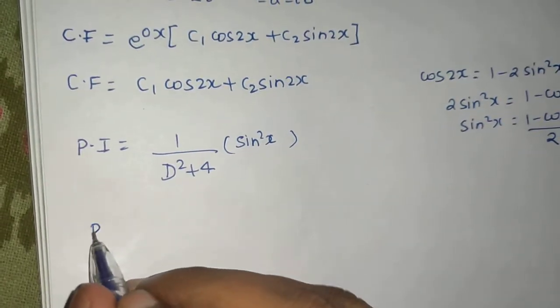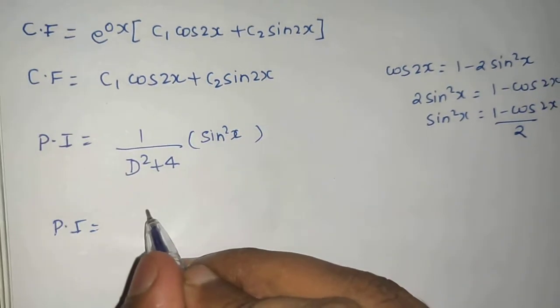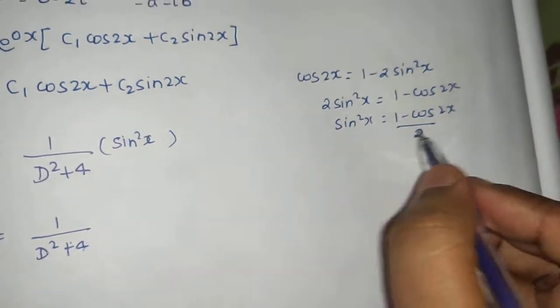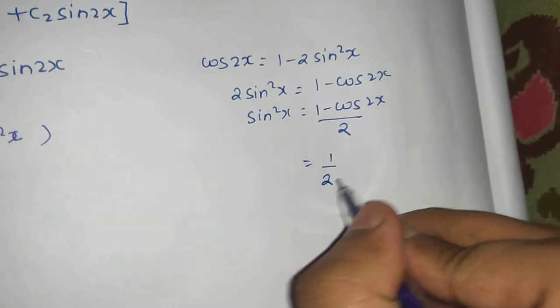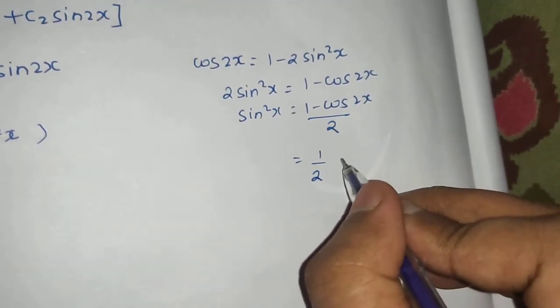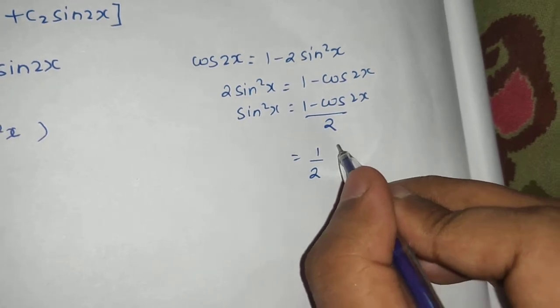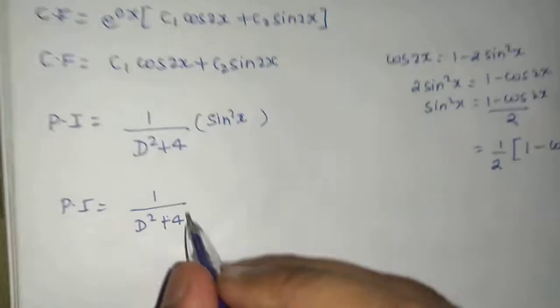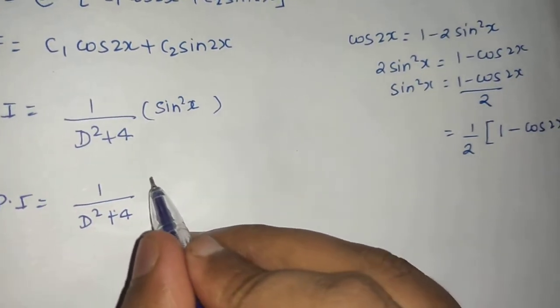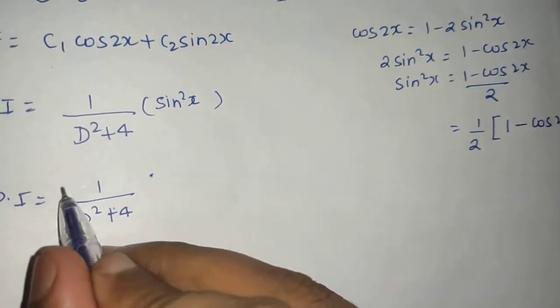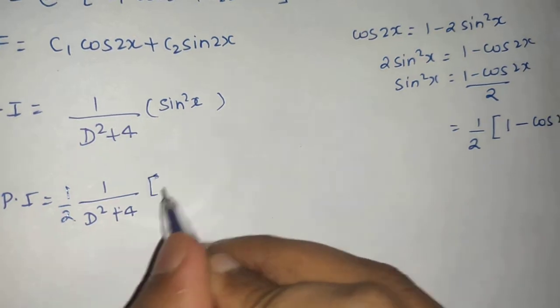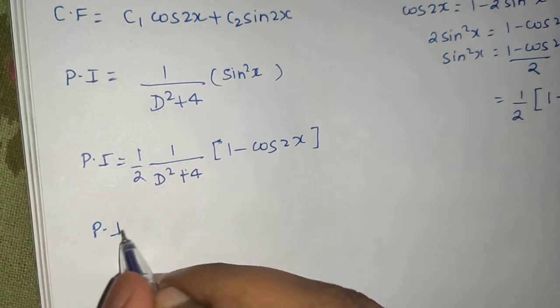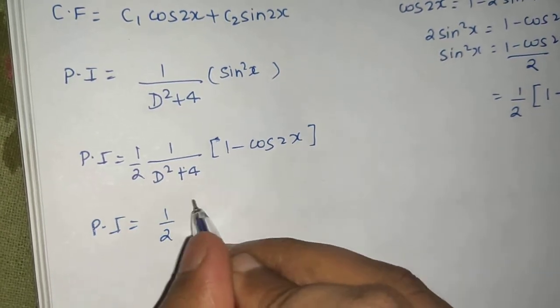So your particular integral will be 1 upon d square plus 4, 1 minus cos 2x. This I can also write as 1 by 2 if I take common, then 1 minus cos 2x. So 1 by 2 I take out, and this is 1 minus cos 2x. Further I can write it separately also, so 1 by 2 out.